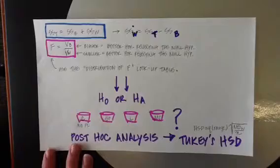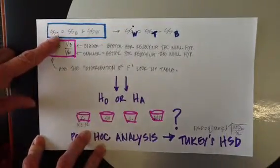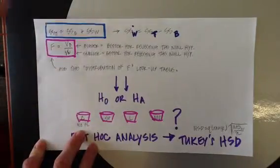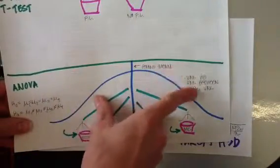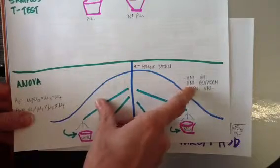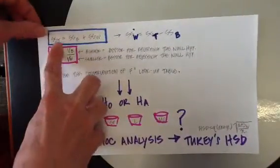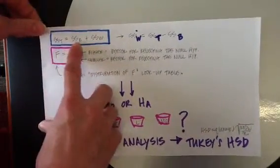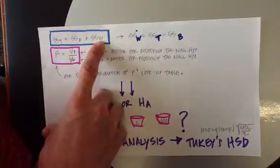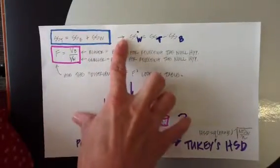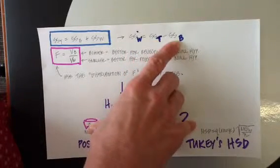We use sum of squares when computing ANOVA. The total sum of squares, which represents all of the variance, incorporates the variance within the groups and the variance between the groups. So the sum of squares for total variance is equivalent to the sum of squares for between variance plus the sum of squares for within variance. Using simple algebra, the sum of squares within equals the sum of squares total minus the sum of squares between.